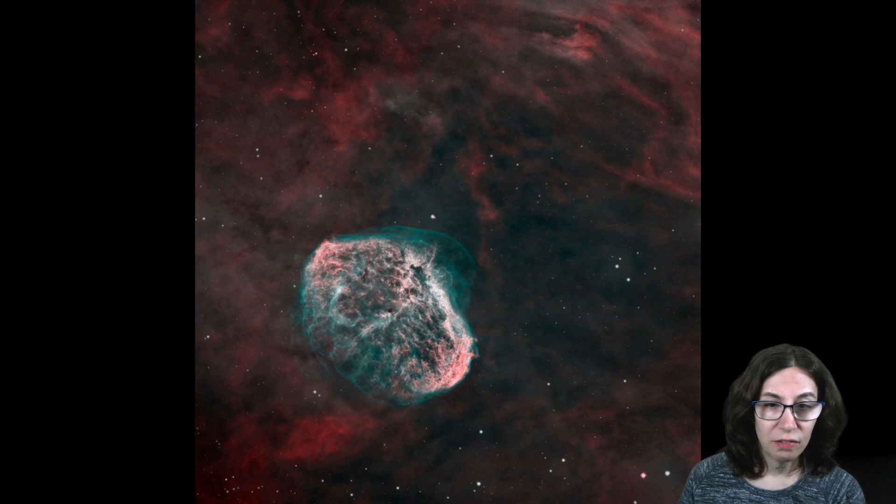You can easily see the flattened sphere of hydrogen that is surrounded by a thinner, more diffuse O3 shell. And in the background, there's a dimmer hydrogen alpha glow.